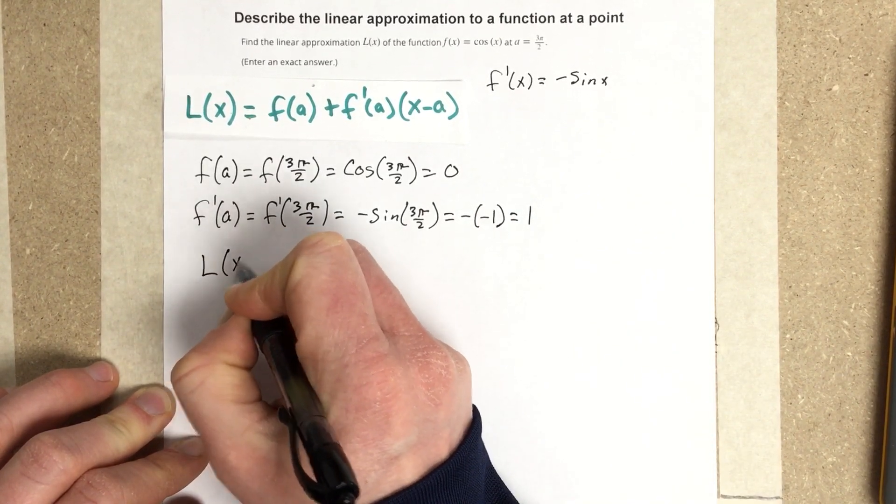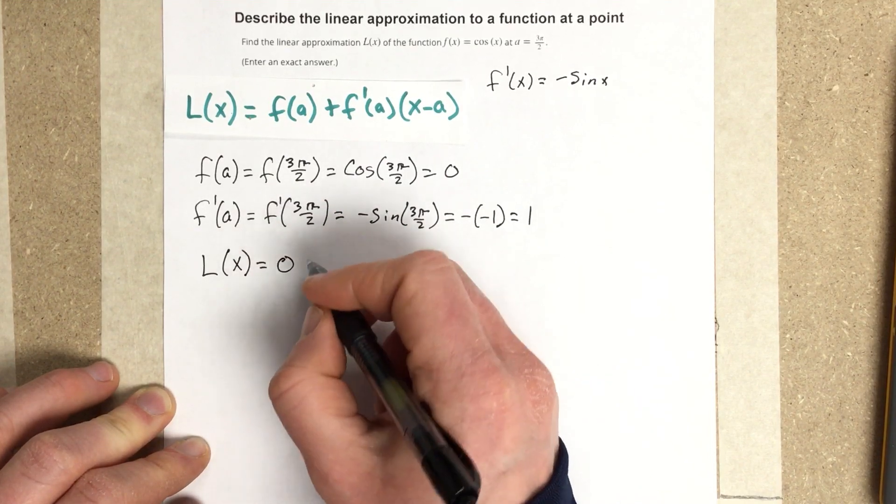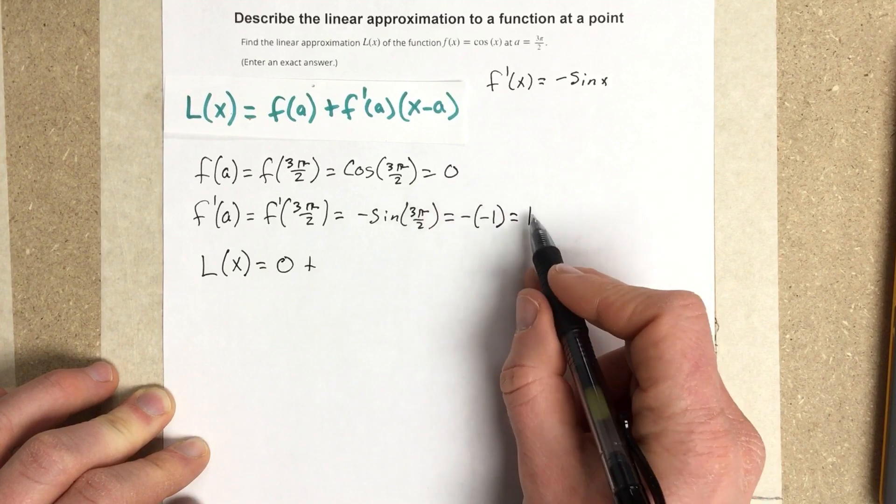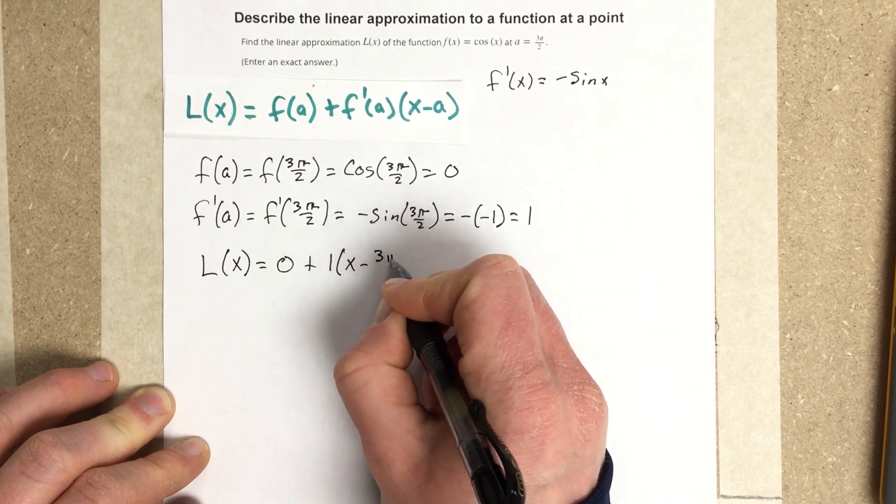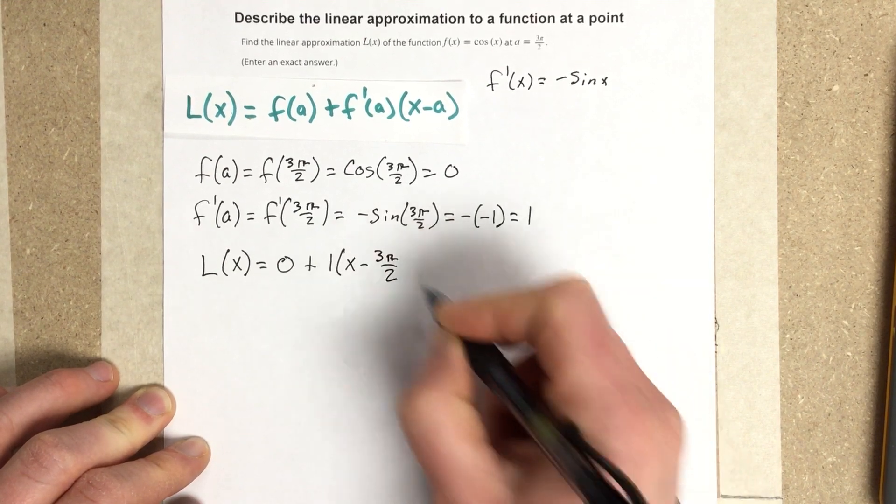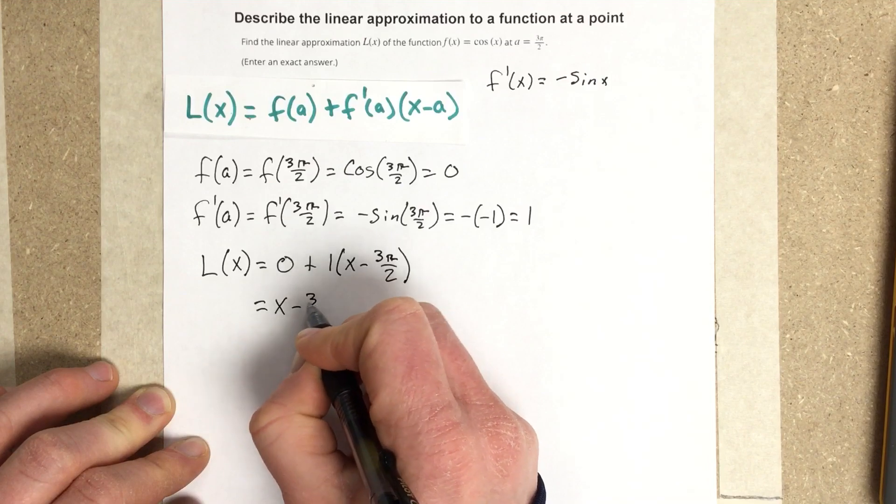So I'm going to use the linearization equation, plug in f(a), which I get to be 0, plus f'(a) is 1, so 1 times (x - 3π/2). When I distribute that, I end up with x - 3π/2.